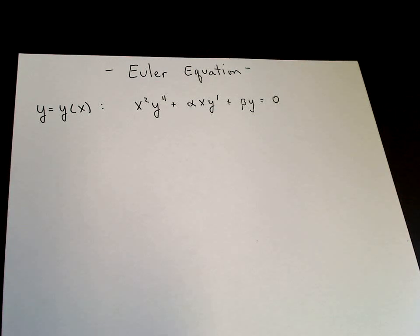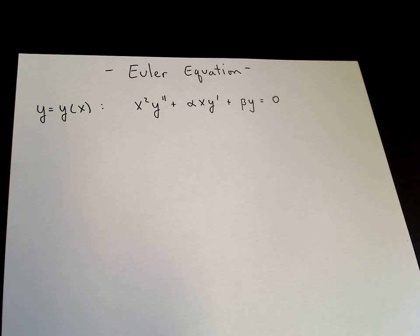Here we want to solve the Euler equation, where y is a function of x. The equation is x squared y double prime plus alpha x y prime plus beta y equals zero.